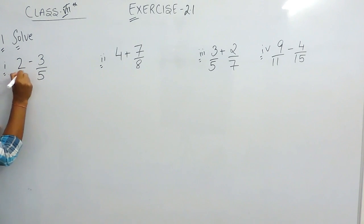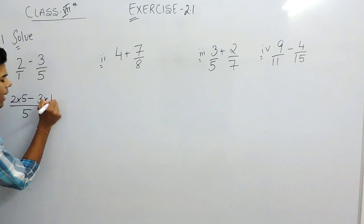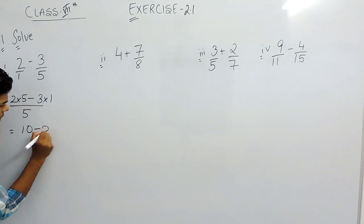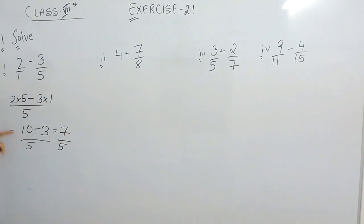So first of all we can write this as 2 upon 1. The LCM of 1 and 5 will be 5. So 1 times 5, and this 5 will multiply with 2, minus 3 will write as it is then 5. 1 times 5 will multiply with 1. So that will give us 10 minus 3 upon 5 and that will be 7 upon 5. This is the answer of part 1.